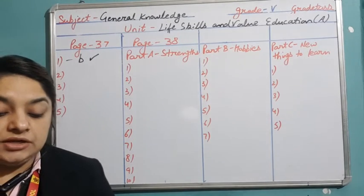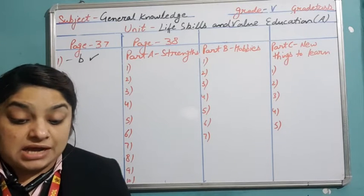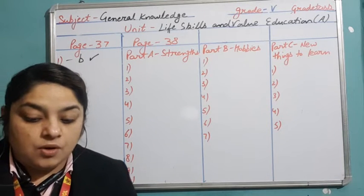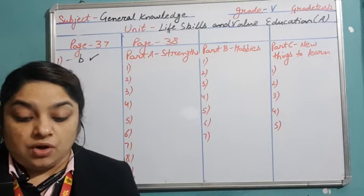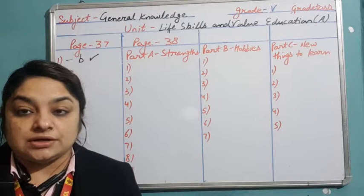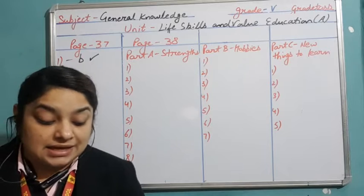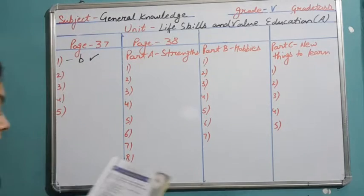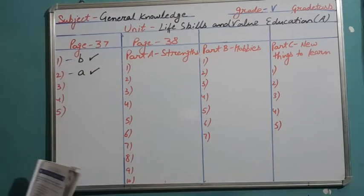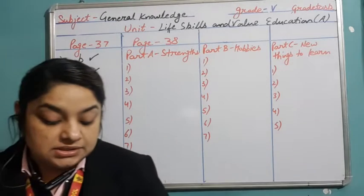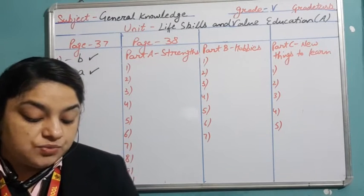Second situation: in your school examination you find a student copying answers from your answer sheet. What should you do? A — ask him or her not to copy, or B — tell your teacher. You should do both — tell the teacher and also ask him or her not to copy.